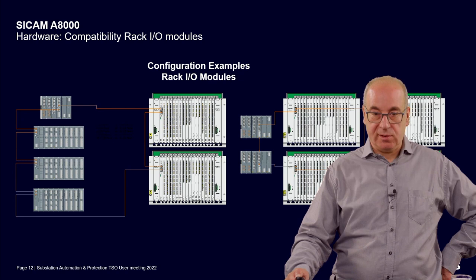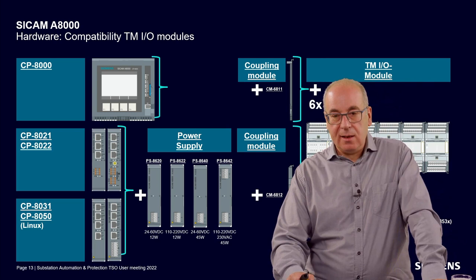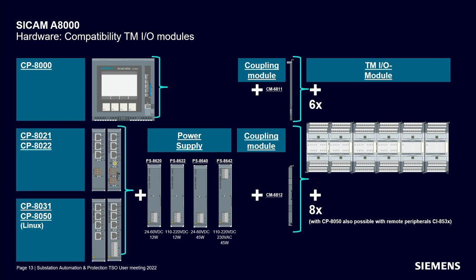For the smaller former SICAM RTU range — SICAM TM, SICAM MIG, SICAM AMIG — you can also use the existing TM I/O modules, and with a special coupling module connect them to the A8000 RTUs. So if you want to migrate existing systems, you do not need to replace everything. It is possible to keep existing I/O modules in place, add only the new CPU and new power supply, and migrate your existing installation to the latest technology regarding cybersecurity and other functionality provided by the A8000 range.